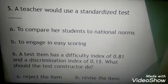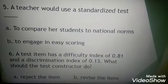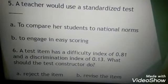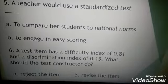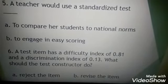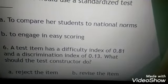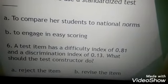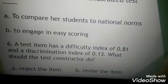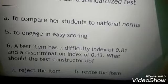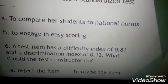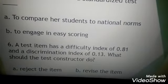Number six: a test item has difficulty index of 0.81 and a discrimination index of 0.13. What should the test constructor do? Remember guys, the difficulty index is 0.81, but the discrimination index only 0.13. So the question is, what should the test constructor do? Is it A, reject the item, or B, revise the item? The answer is reject the item.